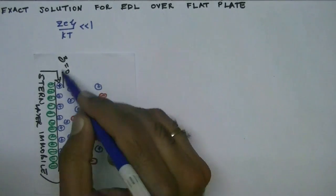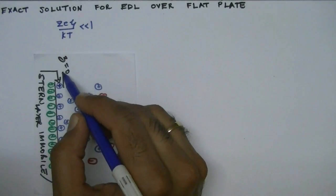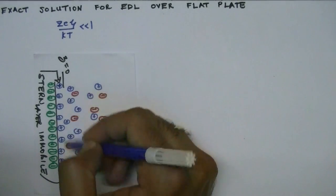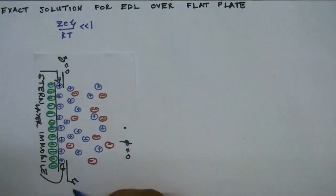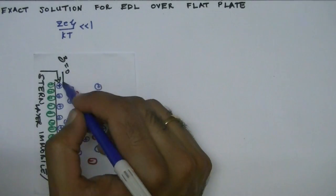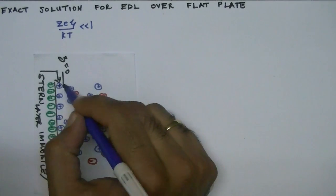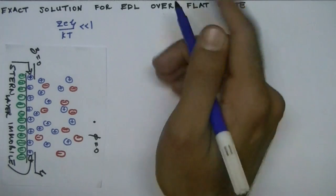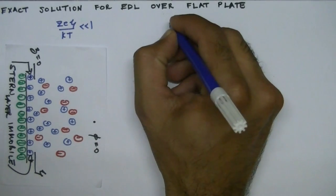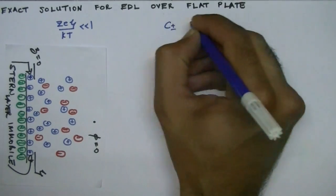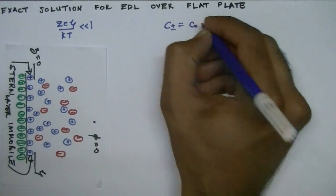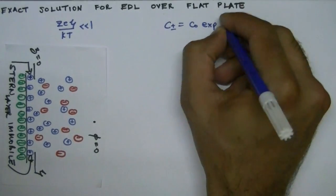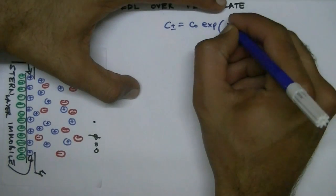We can either neglect the Stern layer or assume that the potential next to the Stern layer is zeta, and we denote this location as z equals 0. The concentration of positive and negative ions is given by the Boltzmann distribution.